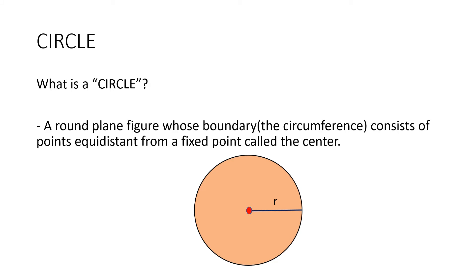This line here, from the center up to one point of the circle, is what we call the radius. Circumference is the total length, or the perimeter of the circle, and the formula of circumference is equal to 2πr or diameter times π. Diameter is simply twice the length of our radius.